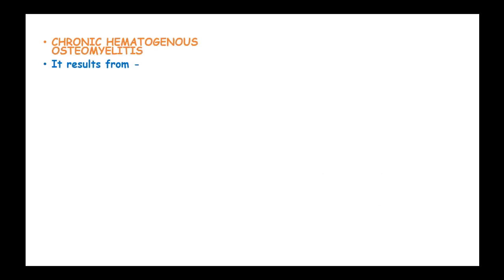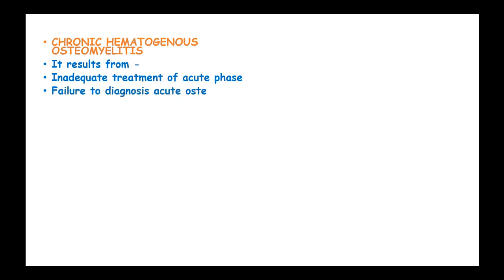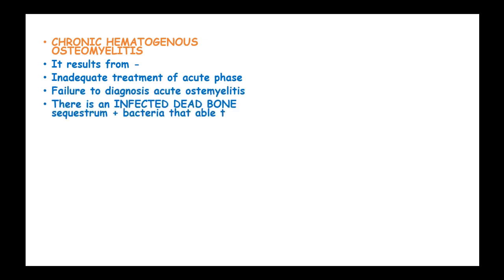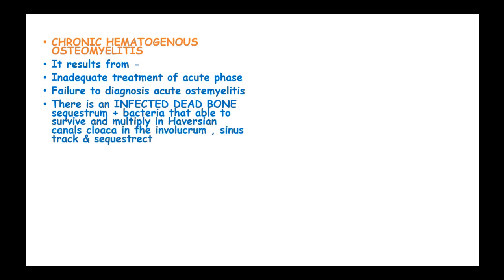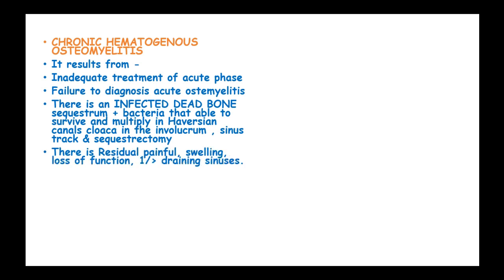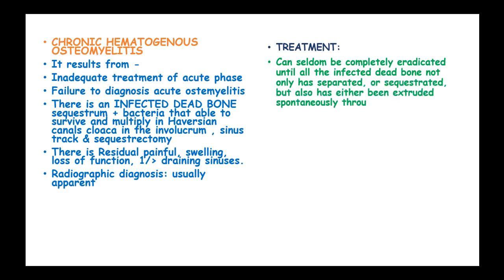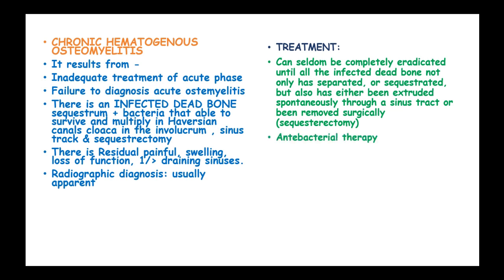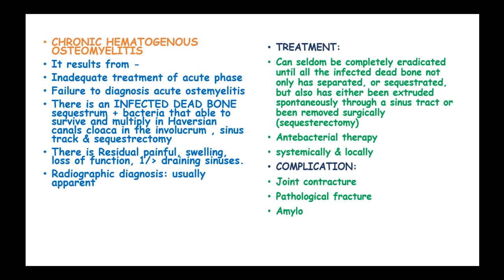Chronic hematogenous osteomyelitis results from inadequate treatment of the acute phase, failure to diagnose acute osteomyelitis, and infected dead bone sequestration — with bacteria able to survive and multiply in Haversian canals, cloaca, involucrum, sinus tracts, and sequestra. Features include residual painful swelling and loss of function with one or more draining sinuses. Radiographic diagnosis is usually apparent, and treatment cannot be completed until all infected dead bone has been sequestrated and either expelled spontaneously through the sinus tract or removed surgically by sequestrectomy. Antibacterial therapy is indicated, and systemic or local antibiotics can be used. Complications include joint contractures, pathological fractures, amyloid disease, and malignant changes leading to epidermoid carcinoma.